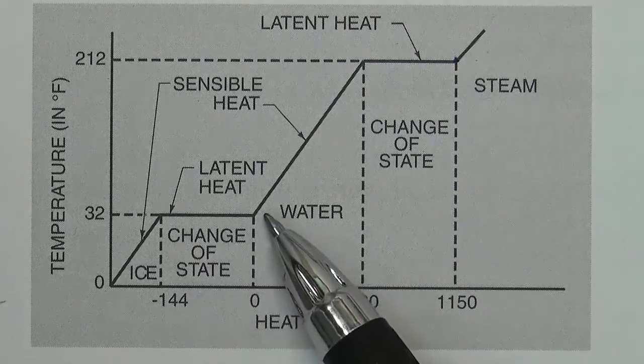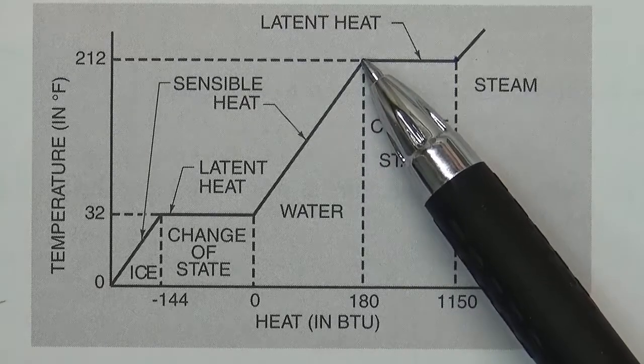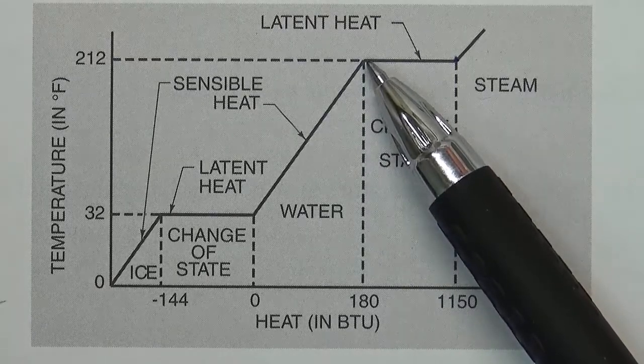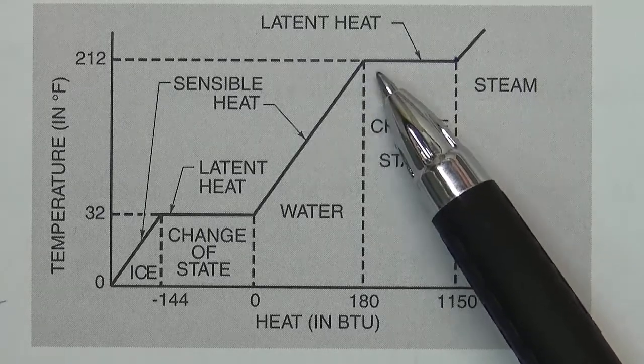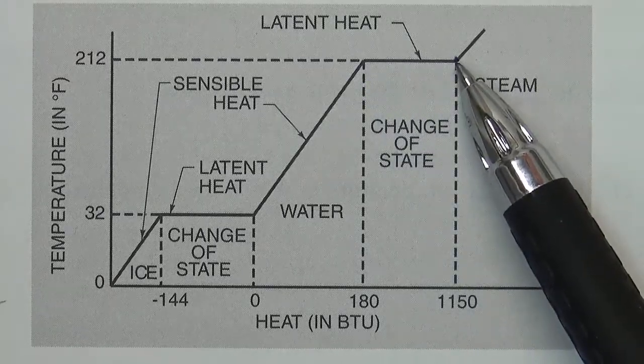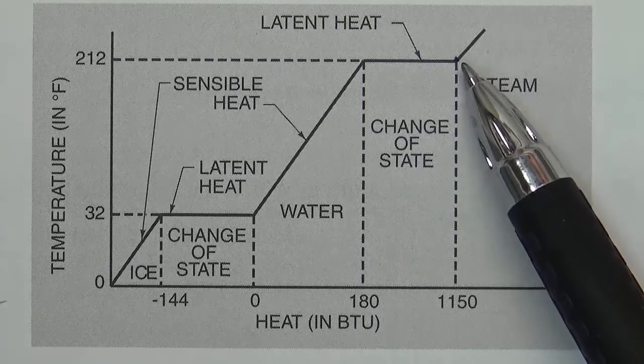Once all the ice is melted, any additional heat we add increases the temperature up to the point where the water starts to boil and go to steam. So here we have 100% liquid, here we have 100% steam. That has a specific term, it's called saturated steam.